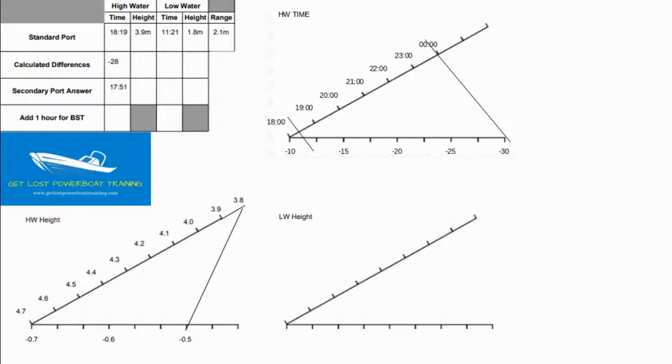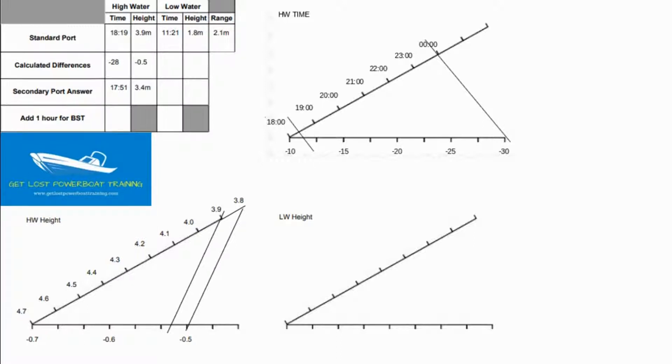Then I'm going to follow the same steps. As with any triangle we connect the ends so I'm drawing a line from 3.8 to minus 0.5 to complete my triangle shape. Then I take a parallel line down to 3.9 metres because that's what's happening at the standard port and I can see that that line is as close as possible to minus 0.5. Then I enter minus 0.5 in my table at the top left. 3.9 minus 0.5 gives me a high water height at the secondary port of 3.4 metres.